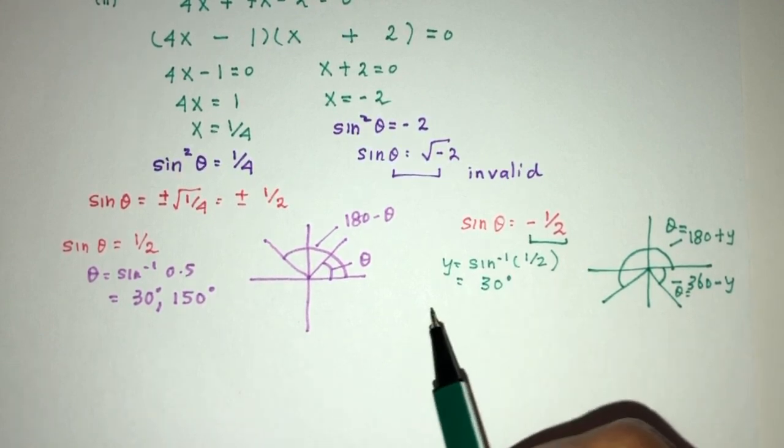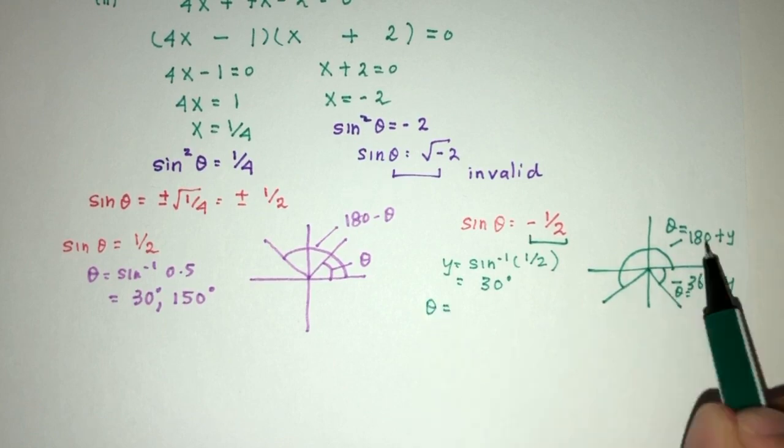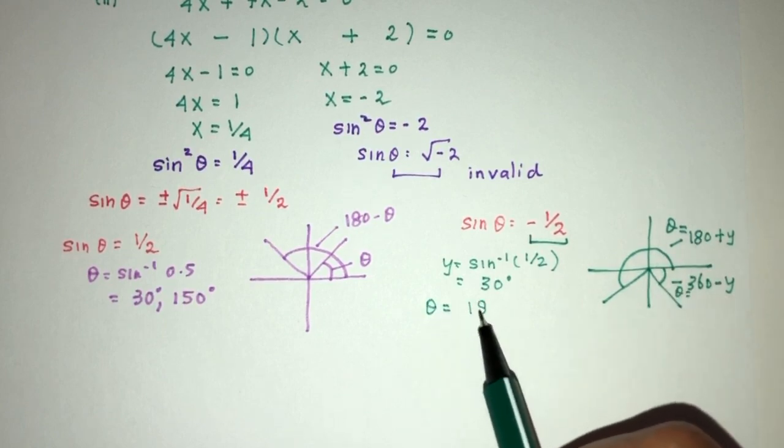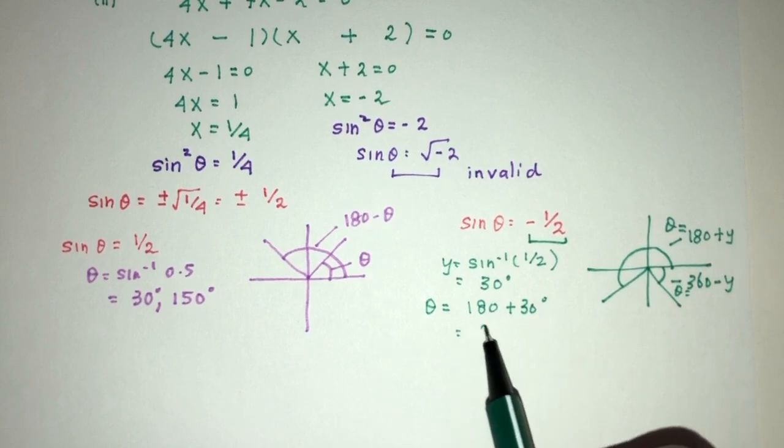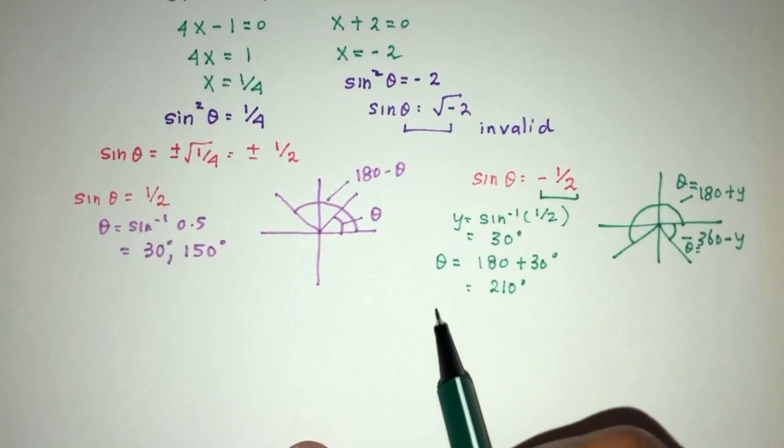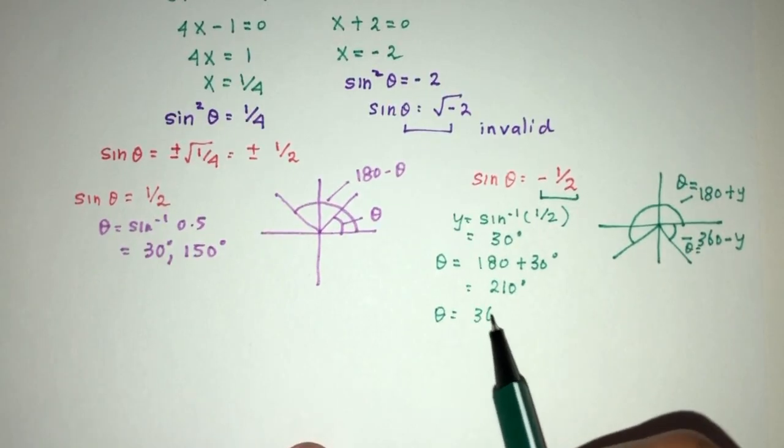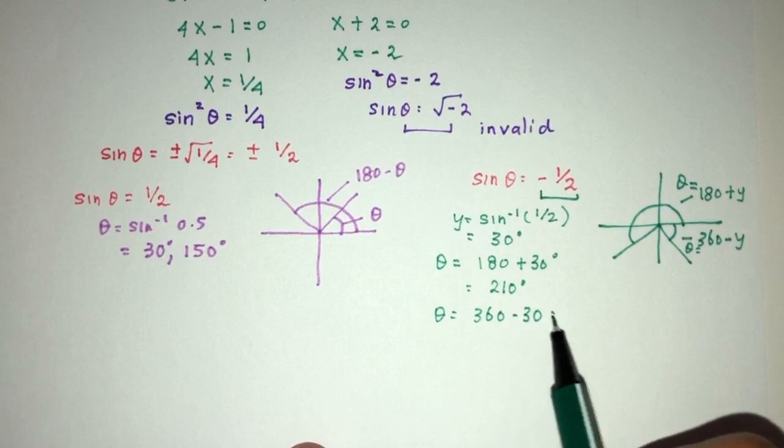Now, y is not your answer. We are trying to find θ. θ will be, according to the quadrants, it will be 180 plus 30. That will be 210. And θ will be 360 minus 30. That will be 330.